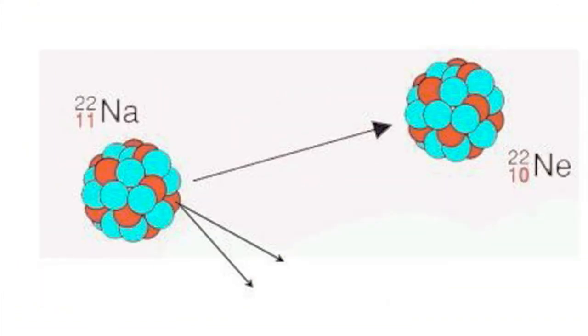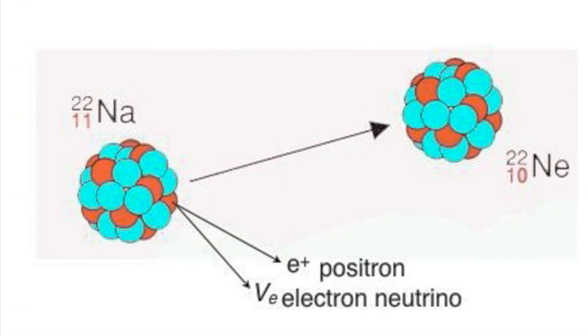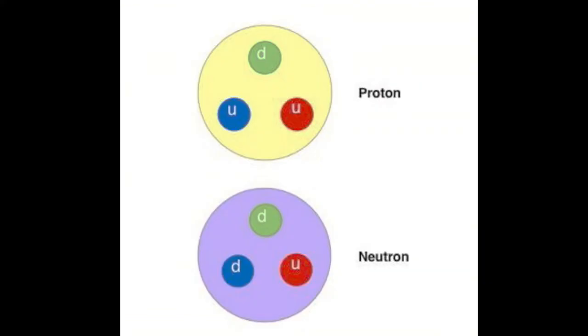As before, two particles are emitted: a positron and an electron neutrino. And as before, there is an intermediate stage of a W-plus boson, which very quickly breaks down to produce the positron and the neutrino. The change in the quark balance is the reverse of the previous example.